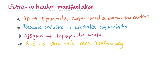Extra-articular manifestations: some rheumatological diseases have symptoms outside of the joint. Rheumatoid arthritis can present with episcleritis, carpal tunnel syndrome, and pericarditis. Reactive arthritis presents with arthritis, urethritis, and conjunctivitis — a famous triad. Sjögren syndrome presents with dry eye and dry mouth. Lupus presents with skin rash and renal insufficiency, because lupus damages the kidney. The skin rash is the famous malar butterfly rash. The mnemonic for reactive arthritis is: can't see, can't pee, can't climb a tree.